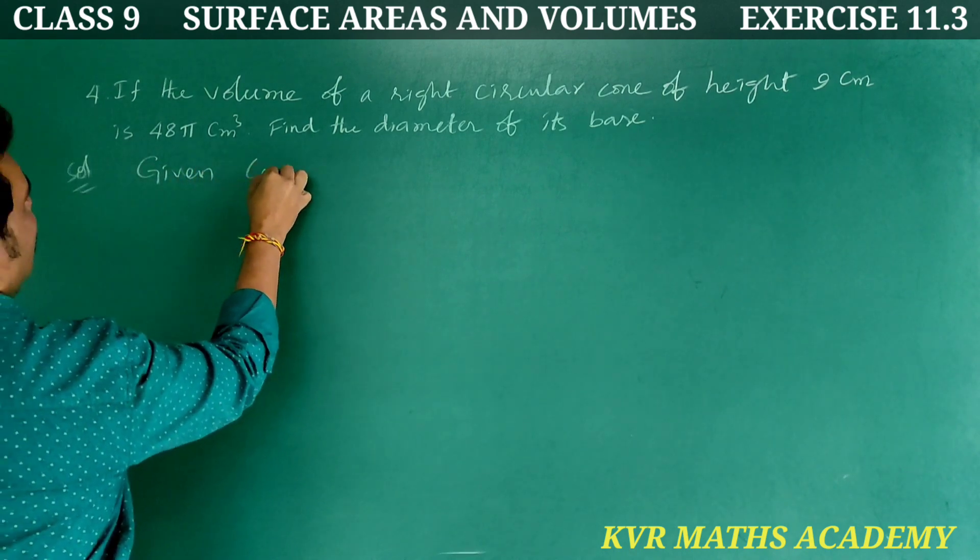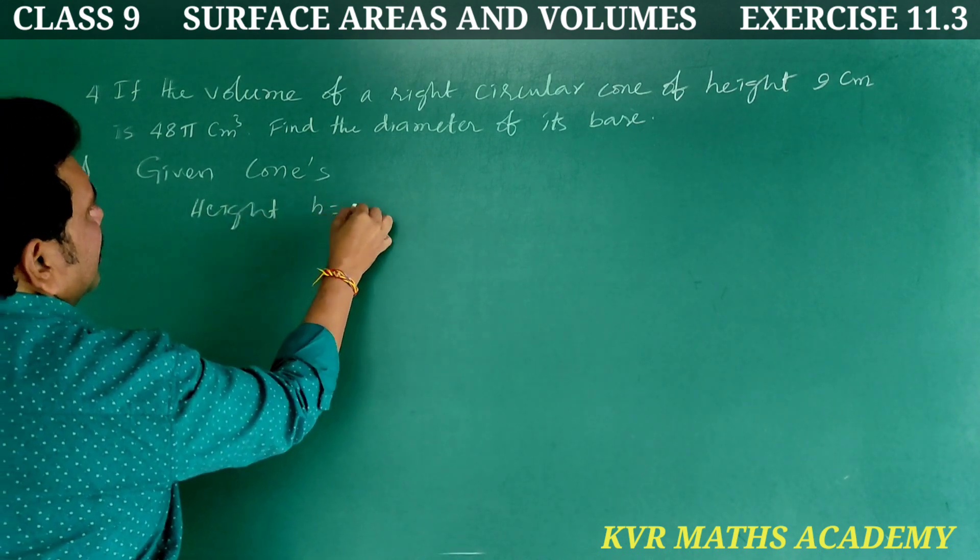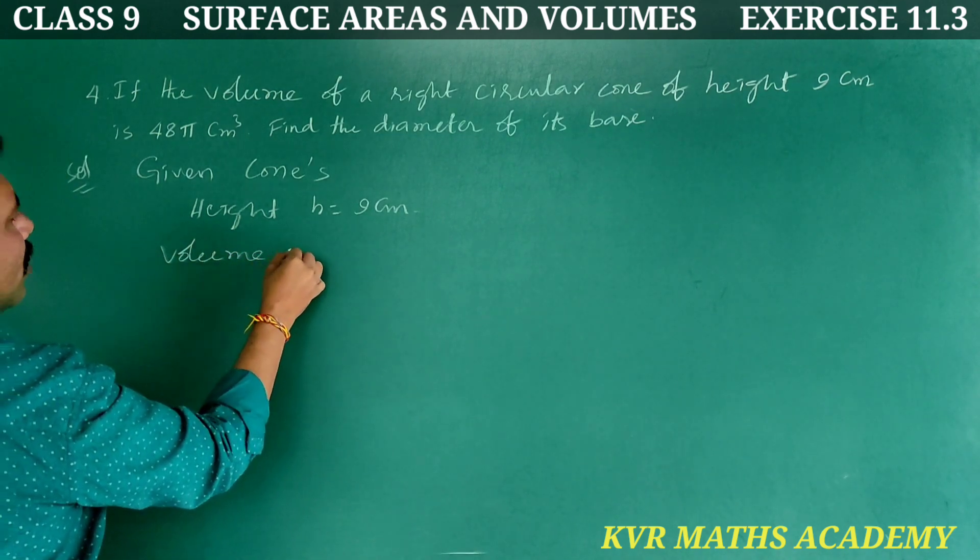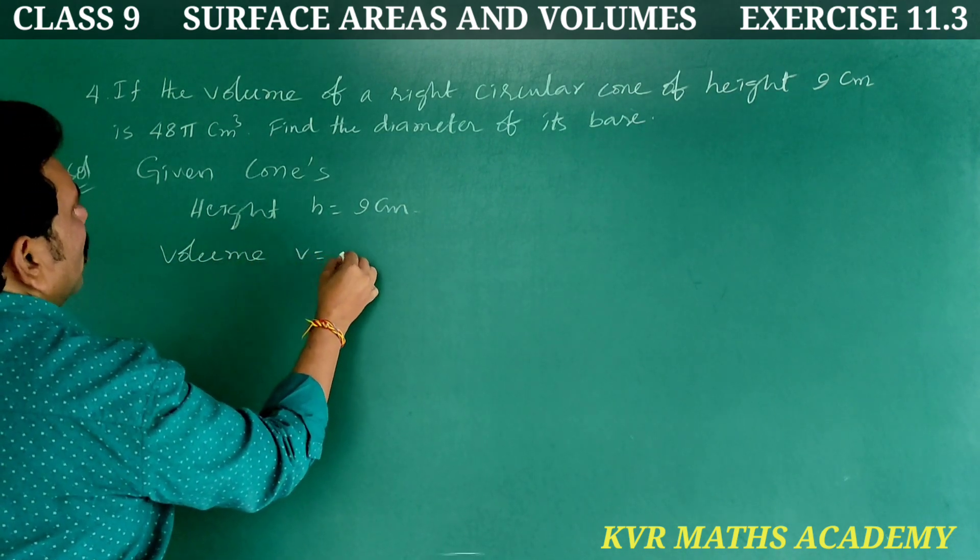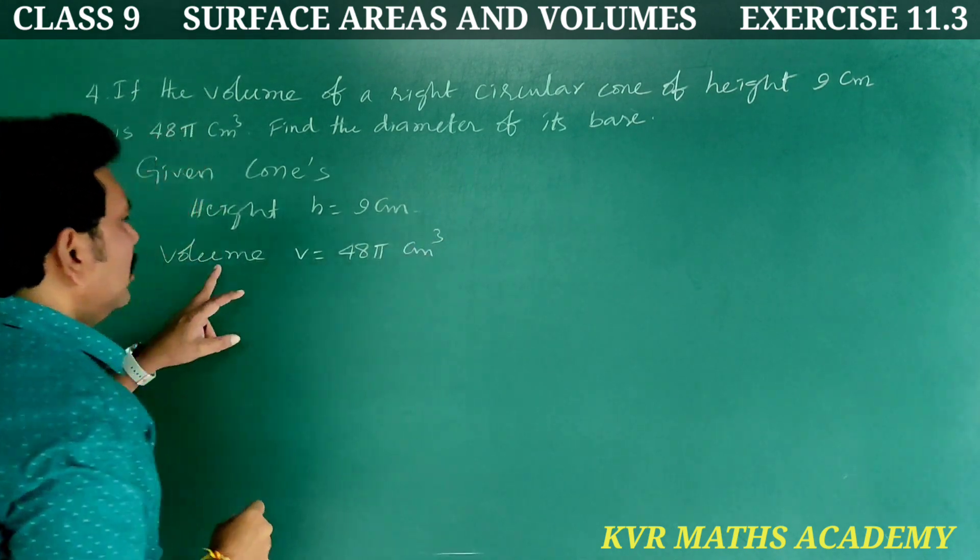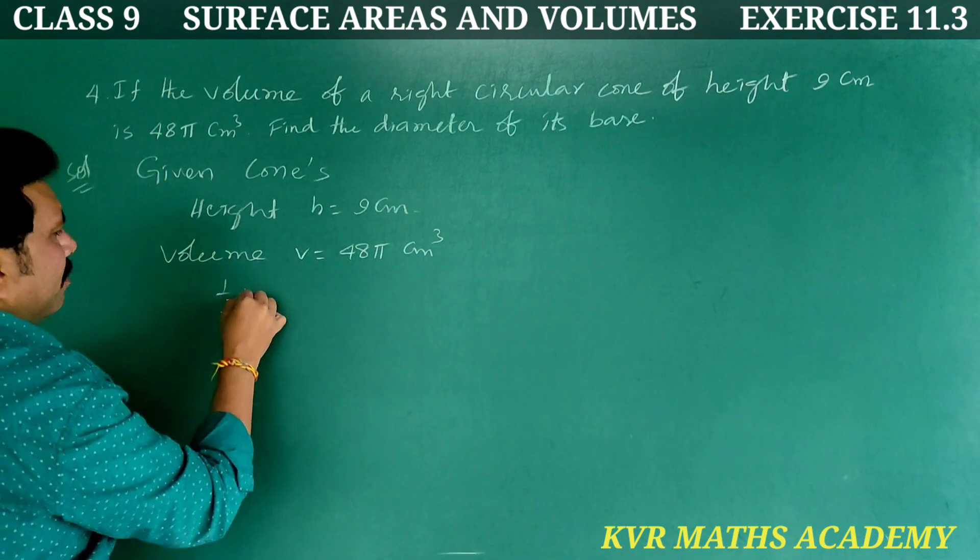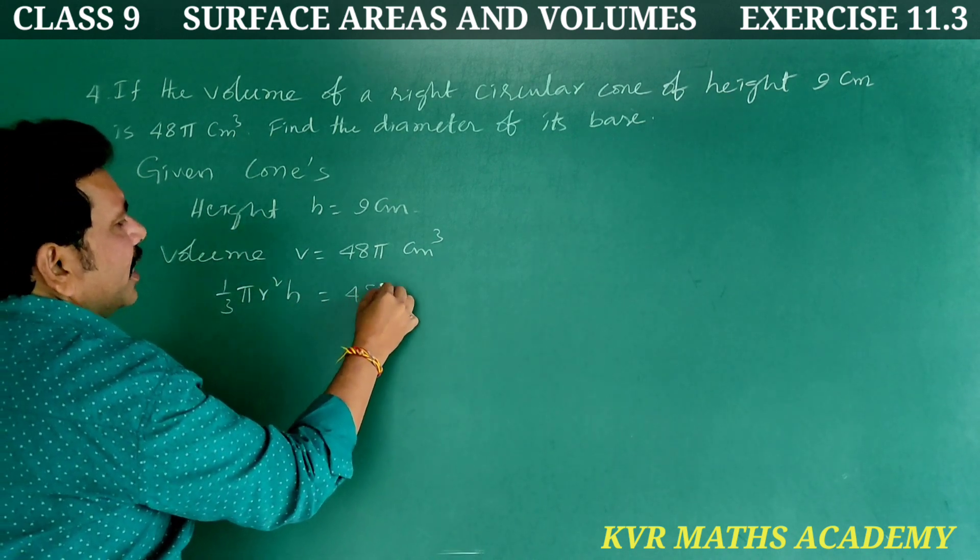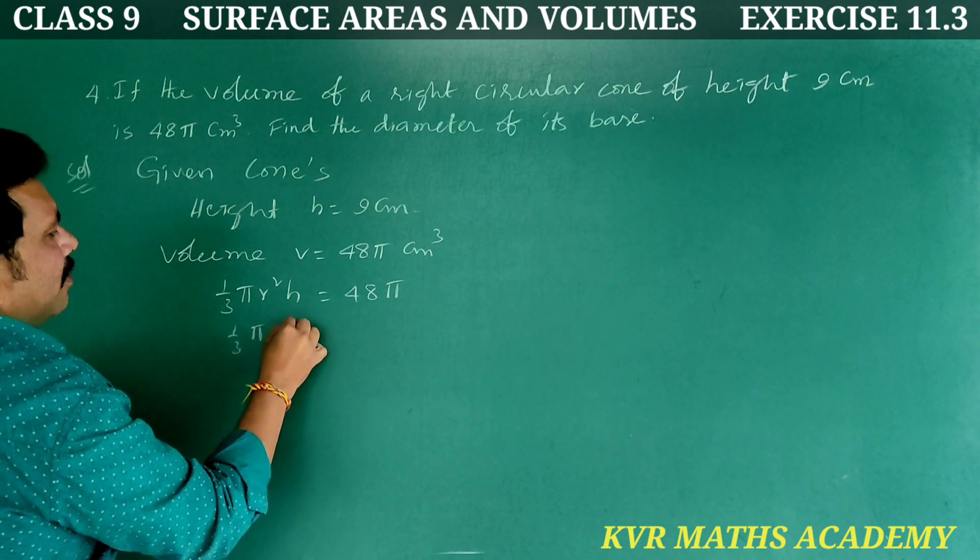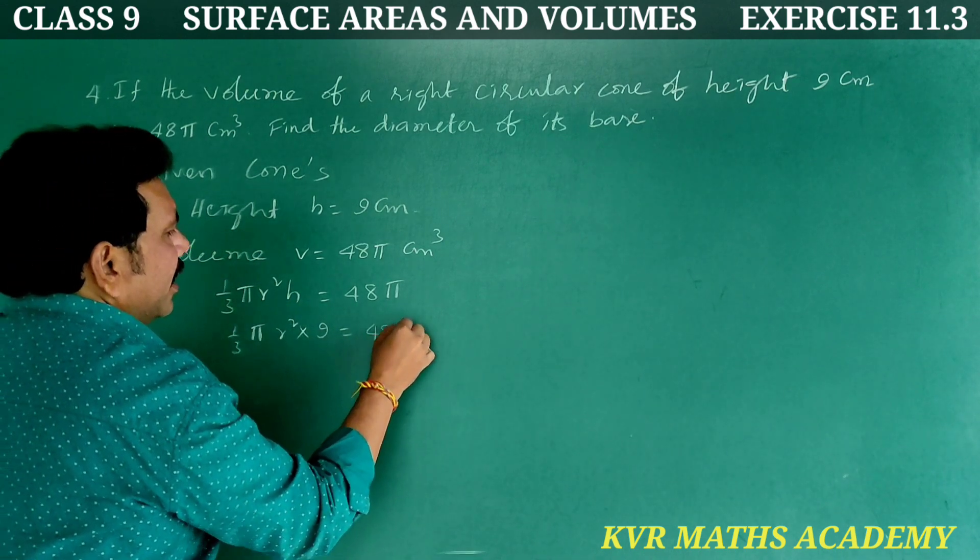Given, cone's height h is equal to 9 centimeters. Next, volume V is equal to 48 pi centimeter cube. Volume formula: volume of the cone is equal to 1 by 3 pi r square h is equal to 48 pi. 1 by 3 pi r square into height 9 is equal to 48 pi.